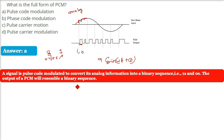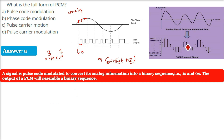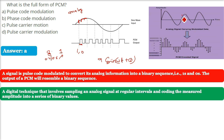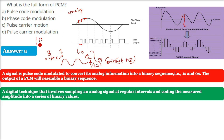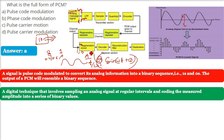A signal is pulse code modulated to convert its analog information into a binary sequence — ones and zeros. An analog signal governed by an equation like sin(ωt + φ) becomes only ones and zeros. These ones and zeros represent the amplitude, frequency, and wavelength that were in the analog signal, using various coding methods. This process of converting analog signal to digital is Pulse Code Modulation, and sampling is the first step.